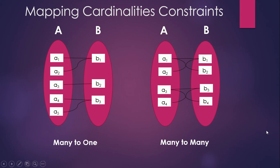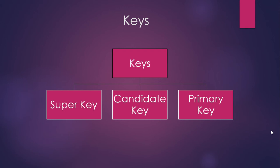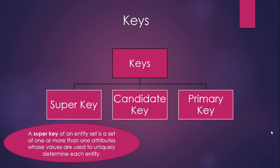Our next topic is keys. We have three types of keys: super key, candidate key, and primary key. A super key is either a single or multiple columns in a database system that uniquely identifies a row within a table. It is a set of one or more attributes or columns whose values are used to uniquely determine each entity.